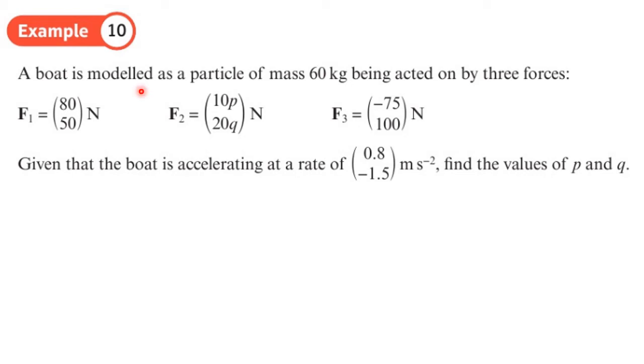Okay so here we've got a boat modeled as a particle of mass 60 kg being acted on by three forces. Given that the acceleration is this, find the values of p and q. Now what does that mean? It means that the resultant force equals the mass times acceleration. So let me write down what the resultant force is: that's F1 plus F2 plus F3.